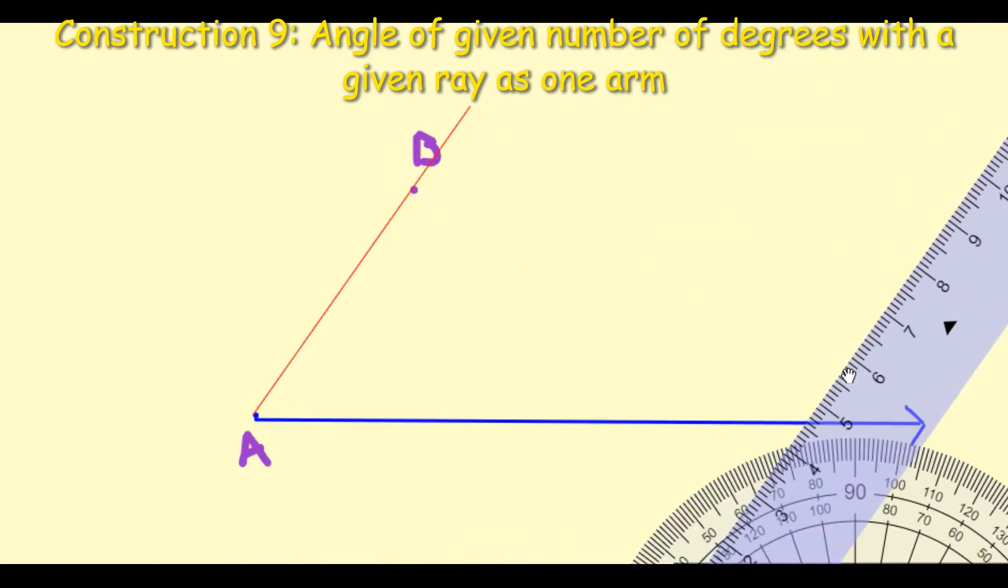Now I'm just going to remove my ruler and I have now created the angle of 55 degrees. Make sure now and just mark that on your picture, and I've denoted my 55 degrees. So that is Construction 9 complete. All you need here really is your ruler, pencil, and your protractor.